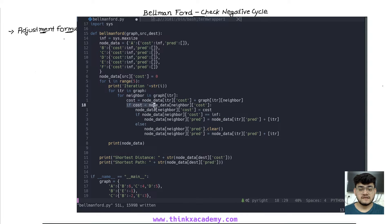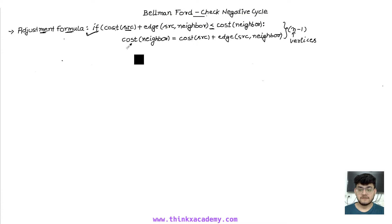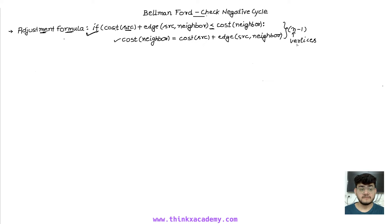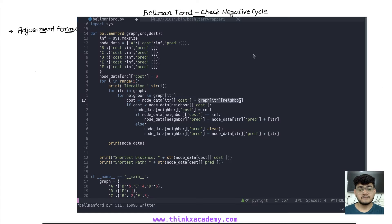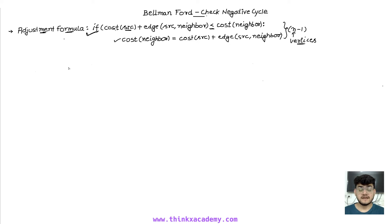The adjustment formula checks: if the cost of the source node plus the edge from source to neighbor is less than the current cost of the neighbor, we reassign and readjust the neighbor's cost. We already know we have to do this n minus one times, where n is the number of vertices — picking each and every node and every neighbor for n minus one iterations.